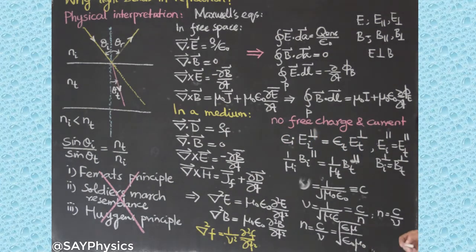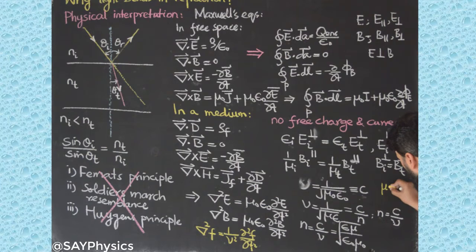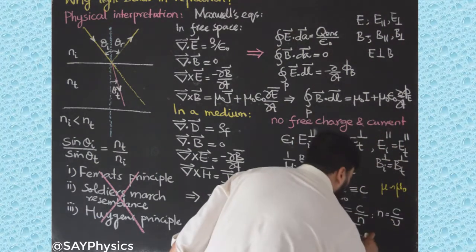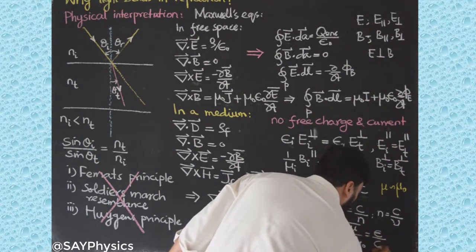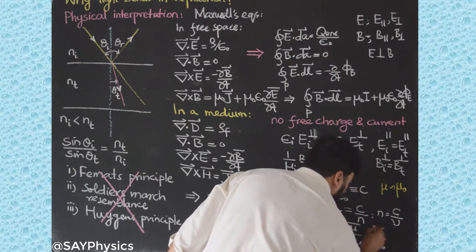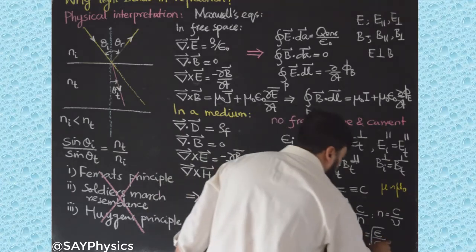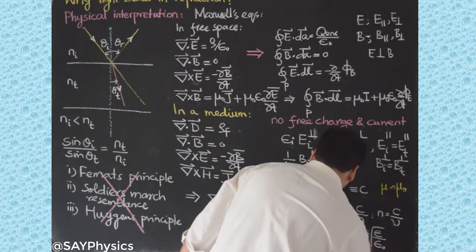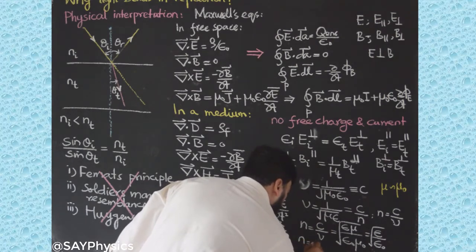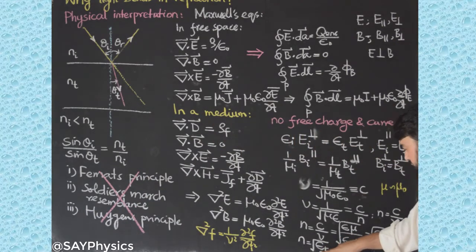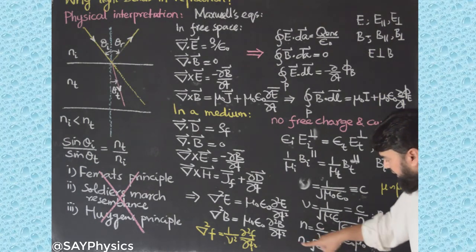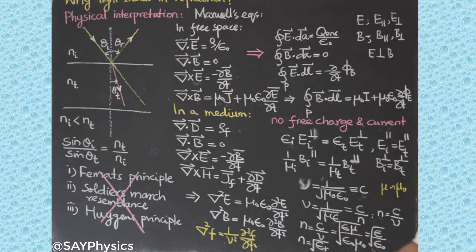The refractive index N equals C over V, which works out to the square root of (epsilon times mu) over (epsilon_0 times mu_0). For most media, mu is approximately equal to mu_0, so the refractive index simplifies to the square root of epsilon over epsilon_0, which is the square root of the relative permittivity, also called the dielectric constant.